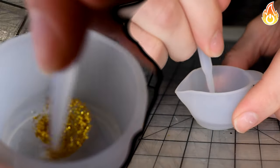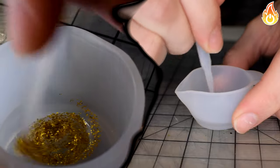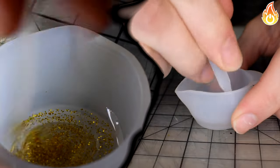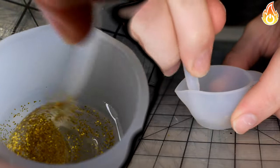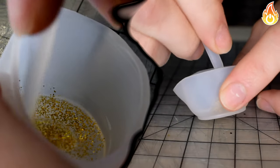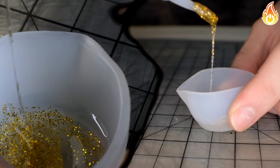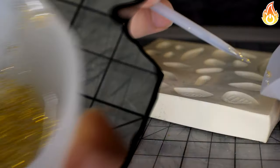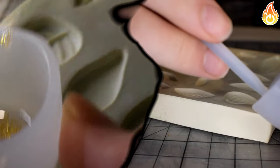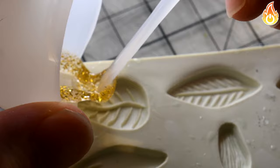We start off by making our first set of leaves. We will have two sets, one that have gold leaf and one that have glitter to add some contrast to the bracelet. To start off, we pour some resin in a silicone cup. We then add some golden glitter to add some pizzazz. We have some leaf molds that we pour the resin into to create the shape.